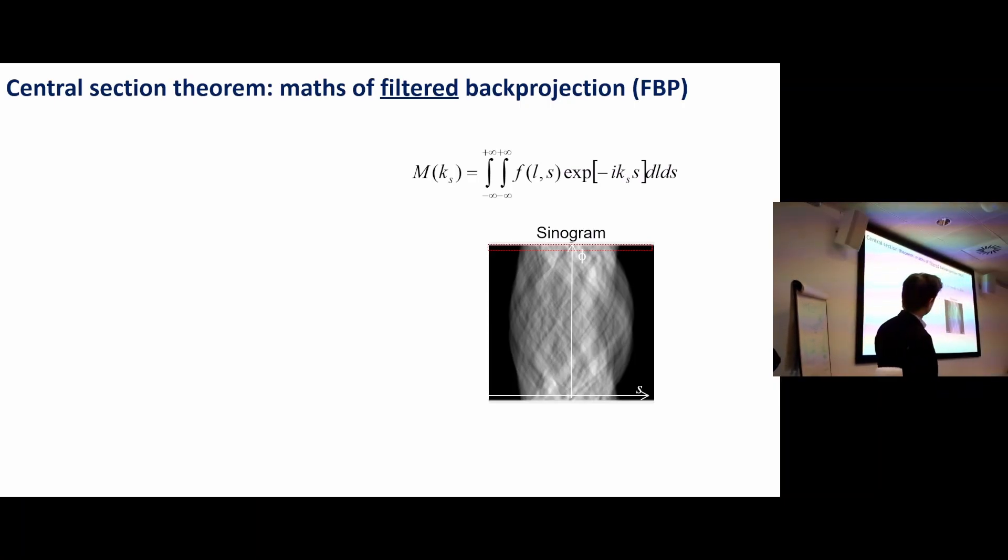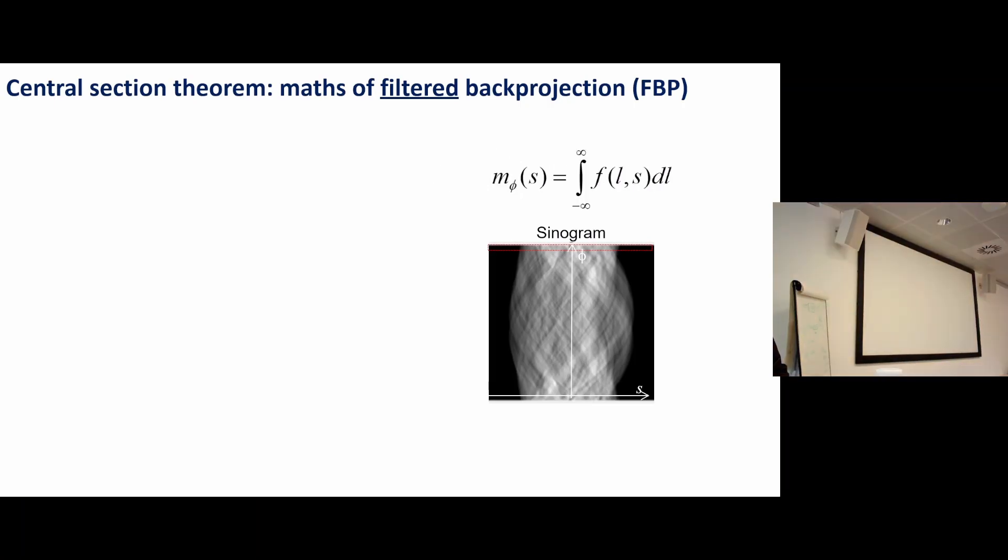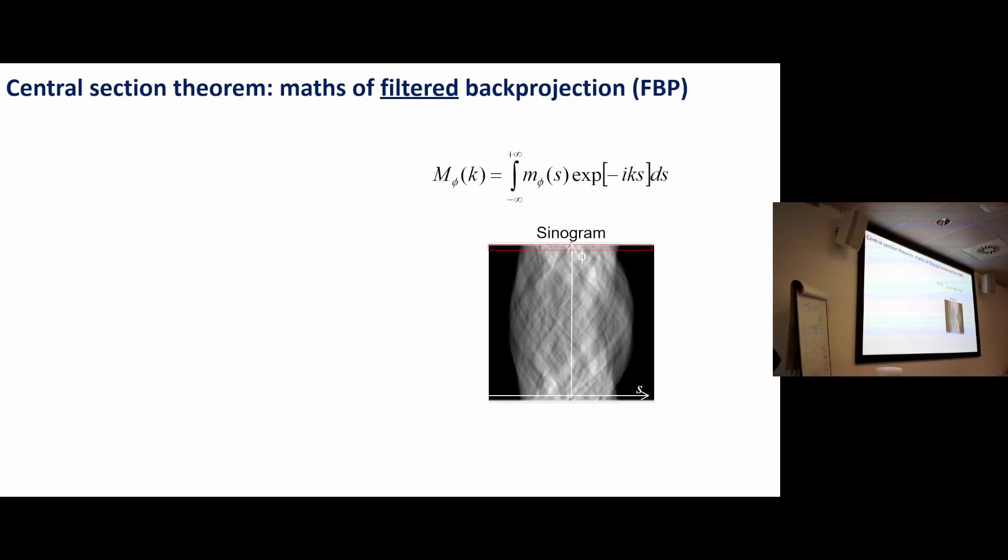What I've done is I've just substituted the definition of m phi s back into that formula. That's the definition—m phi s is equal to the integral of fls dl. That's the definition of the Fourier transform. I should have these equations on the screen at the same time, sorry about that. That's the definition of the Fourier transform of m phi s. If I substitute m phi s equal to integral fls dl back in, that is my description of the 1D Fourier transform of one row of a sinogram.